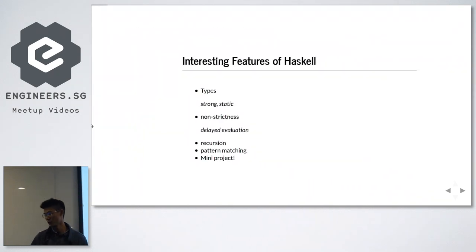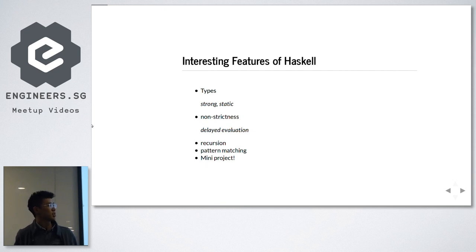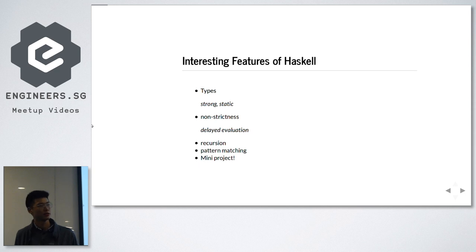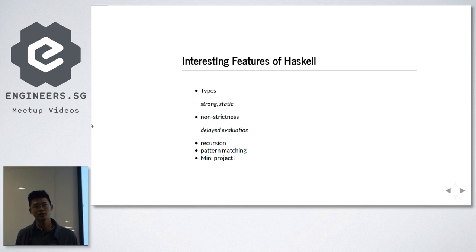Today I'll be going through the following things that actually interest me. The type system in Haskell — they're strong and static. What I mean by this: if you have a function that takes two integers, you can only take two integers in Haskell, and you do not have type coercion. So if you give it an integer and a string, it does not work. You also have non-strictness, so you can have infinite lists — stuff that doesn't get evaluated until it's needed. And you have recursion, pattern matching, and later on a mini project.